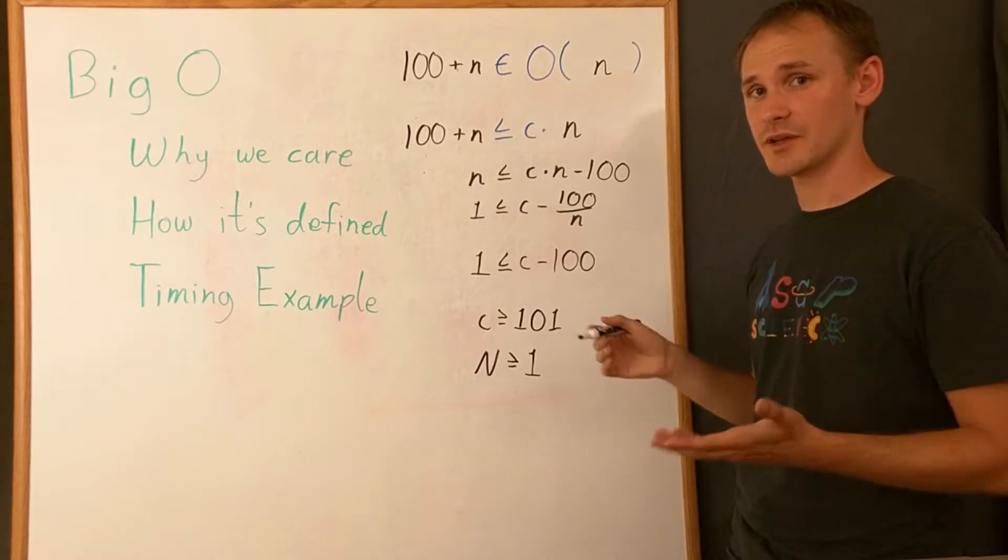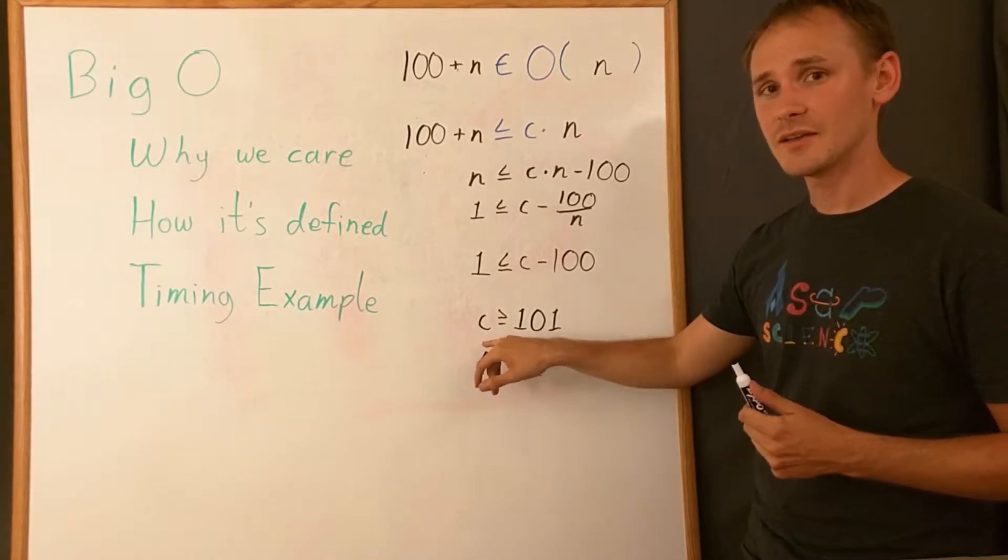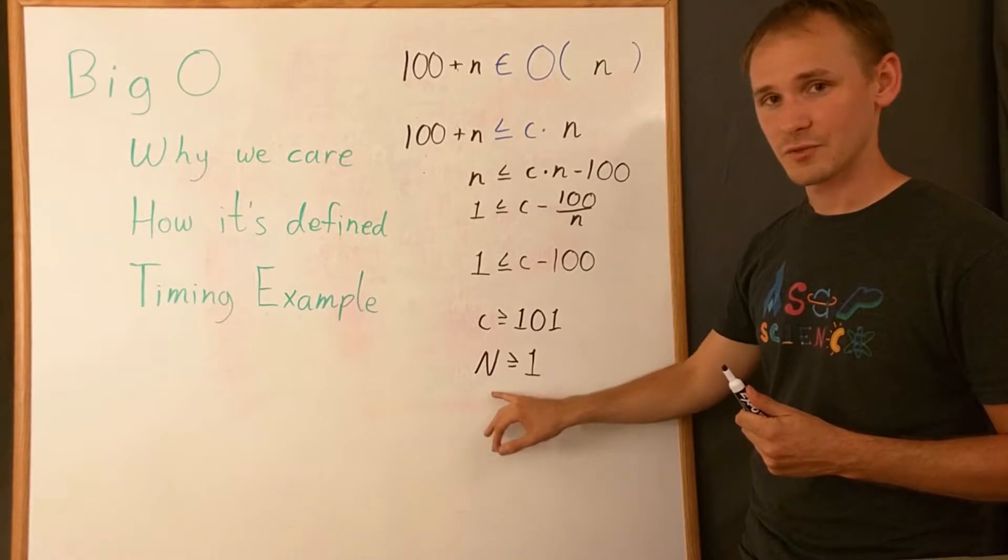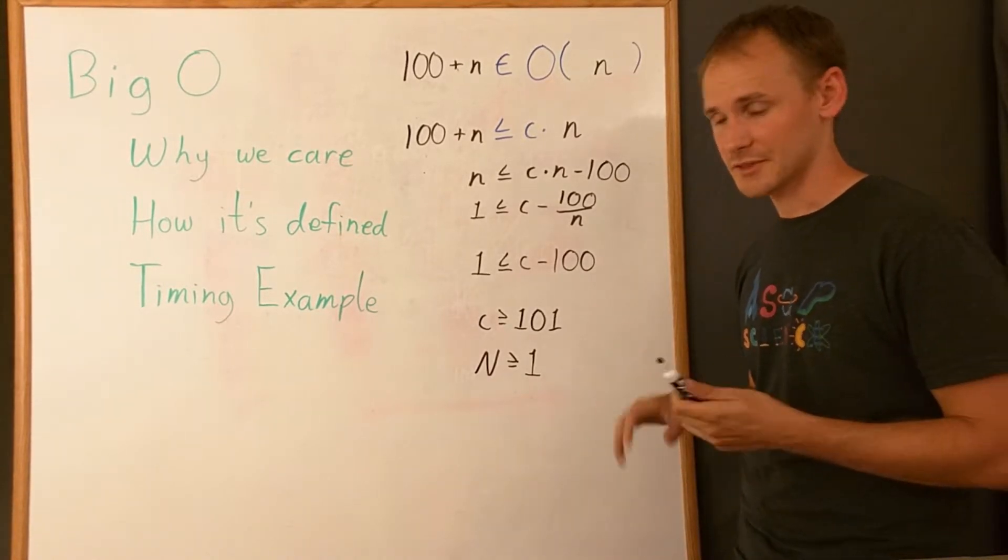Note that if we wanted to take some extra steps, we'd actually be able to find a c that always works for an n that we choose, or vice versa.